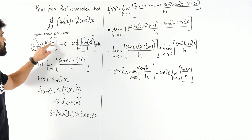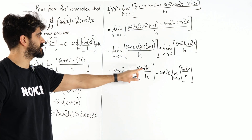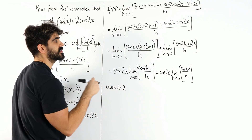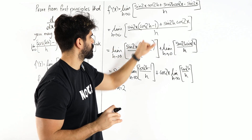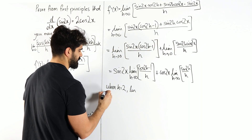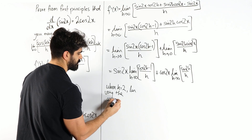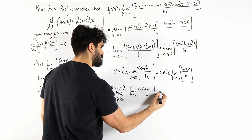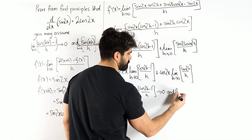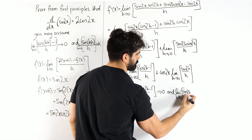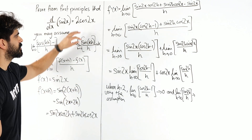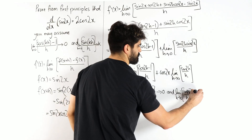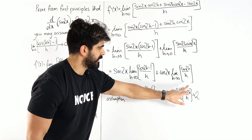Now what does that mean? cos(kh) minus 1 over h tends to 0 — cos 2h minus 1 over h is the same form, where k equals 2. So using the assumption (which comes from the small angle approximation), the limit as h tends to 0 of cos 2h minus 1 over h tends to 0. For the second limit, since sine theta is approximately theta, sine kh is approximately kh, the h cancels, and you're left with k. So this limit becomes 2 — you're just left with 2h over h, which is 2.